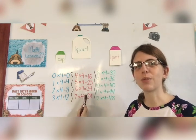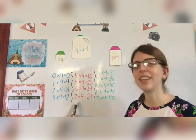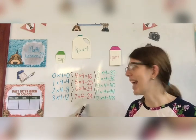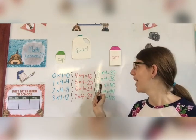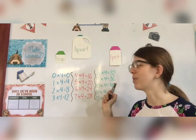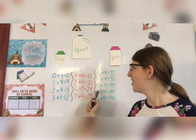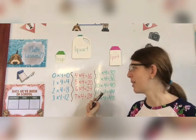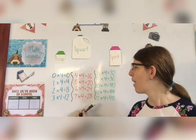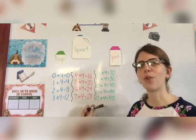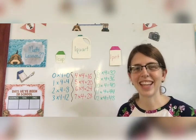6 times 4 equals 24. 7 times 4 equals 28. 8 times 4 equals 32. 9 times 4 equals 36. 10 times 4 equals 40. 11 times 4 equals 44. 12 times 4 equals 48. Nicely done.